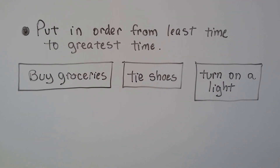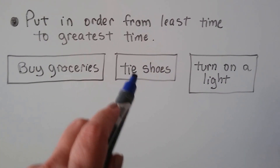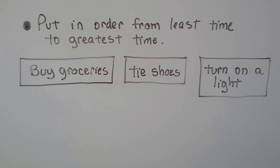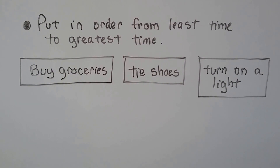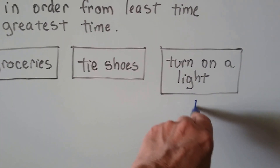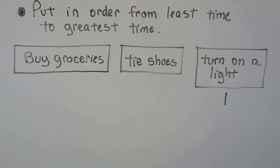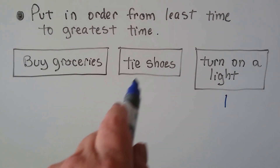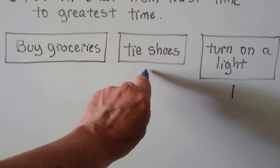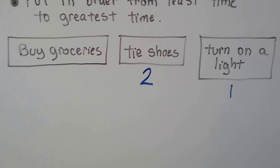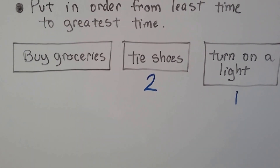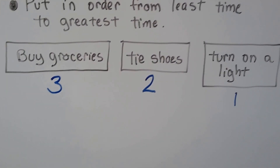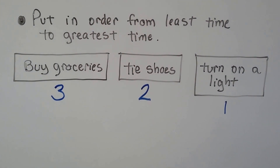Let's put these in order from least time to greatest time: buy groceries, tie shoes, or turn on a light. Which can you do the quickest? Turn on a light — that's number one, it just takes a couple of seconds. Next would be tie shoes, which takes about a minute or two for both. And buying groceries takes the most time because you have to drive, go down the aisles with a cart, pay, load the car, and come home. That's the correct order!